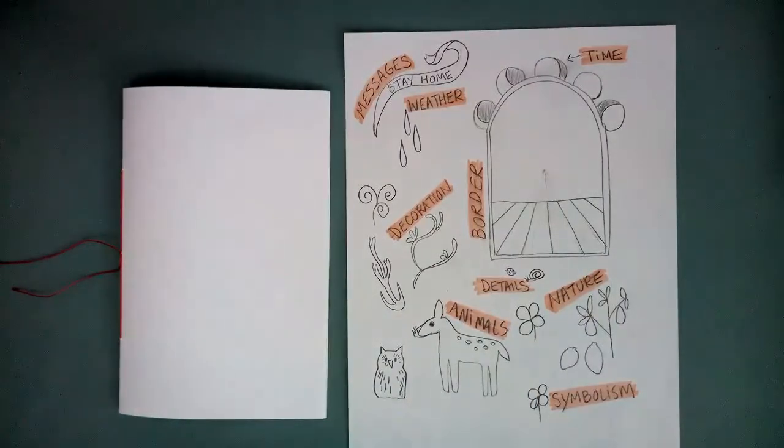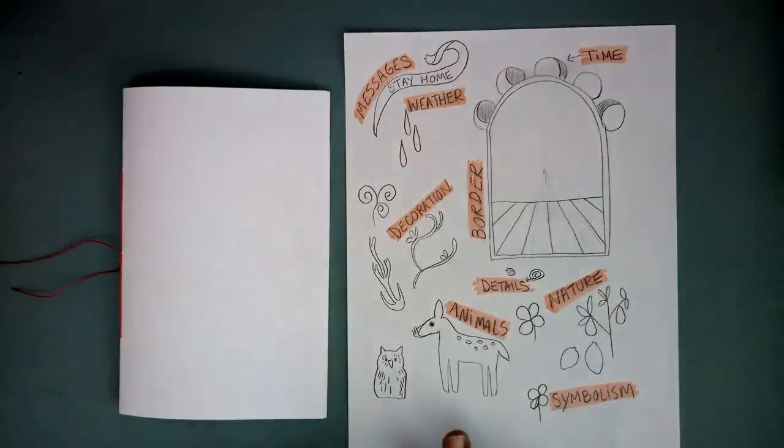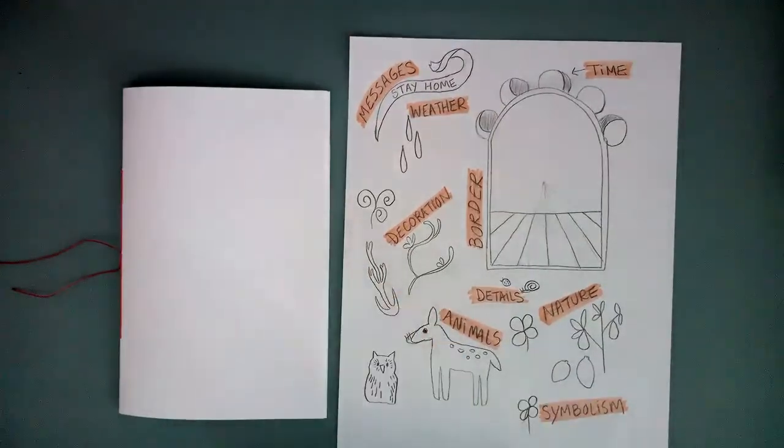So in the assignment details, there are some more visual examples. Have some fun with this project this week. You can choose any month. The book of hours had calendar pages. You can choose any month to illustrate for your calendar page. It doesn't have to be this month. All right, that's all.